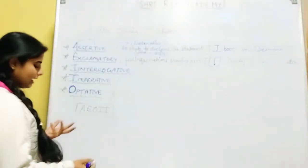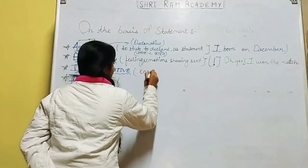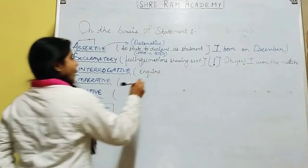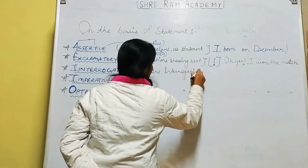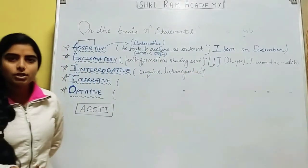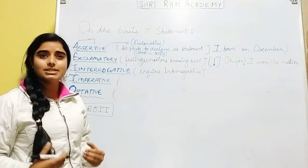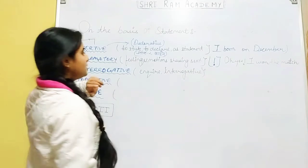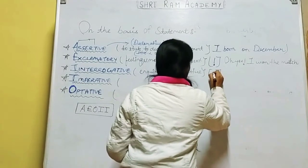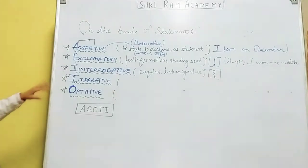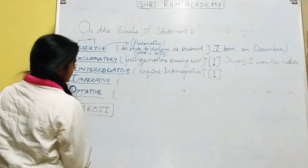अब हम आते हैं interrogative पर. Interrogative का मतलब है inquiry or interrogation. जभी भी आपसे कोई inquiry हो रही हो — suppose I say 'What is your name?' or 'Where are you going?' — जब मैं ऐसे questions frame करती हूं जो बदले में answer चाहते हैं, वो sentences interrogative sentences होते हैं. इसमें एक mark आपको मिलेगा — that is, the question mark. Interrogative sentences को question mark से पहचाना जाता है.